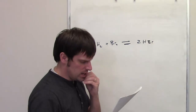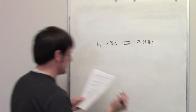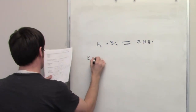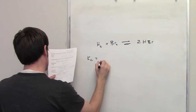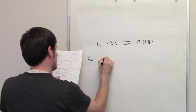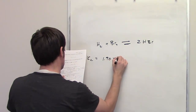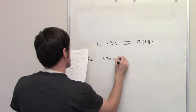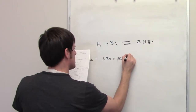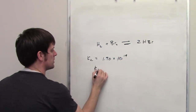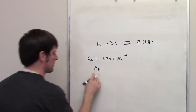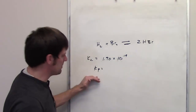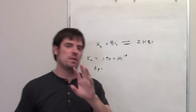The question tells us that the equilibrium concentration constant Kc is 1.9 times 10 to the 19th. It then asks us to determine what the equilibrium constant is with respect to pressure.